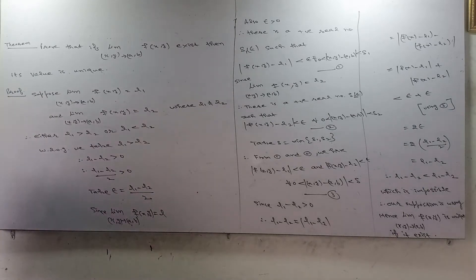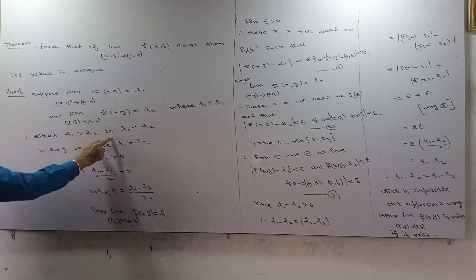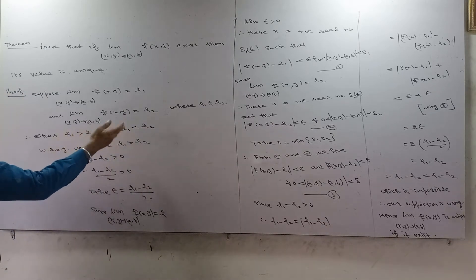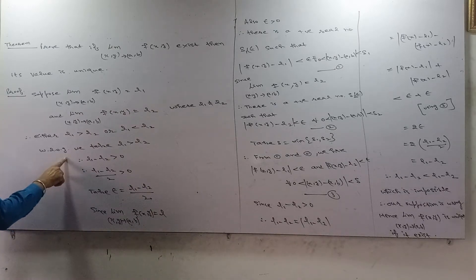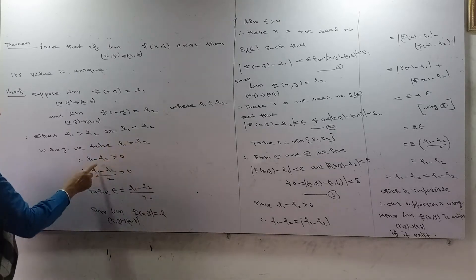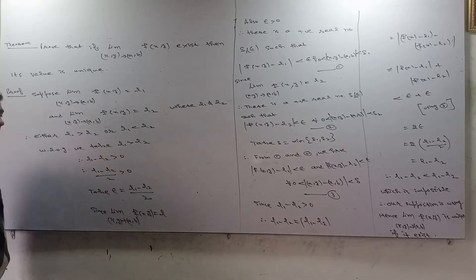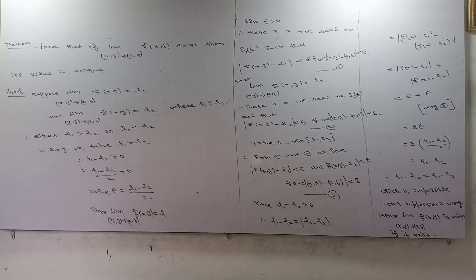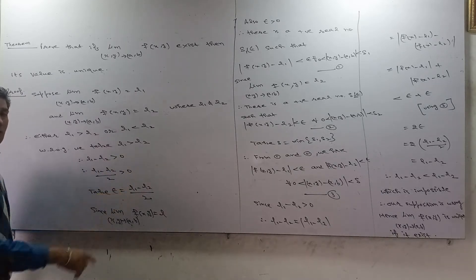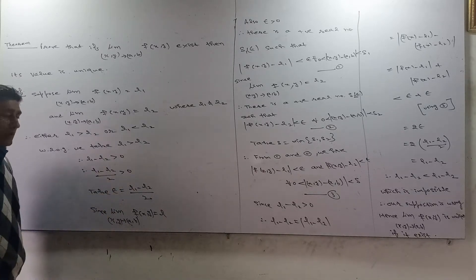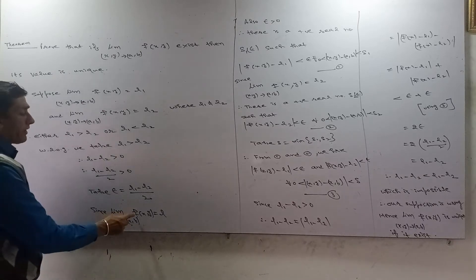Therefore, either L1 equals L2 or L1 is less than L2. Since L1 is not equal to L2, we take epsilon 1 equal to |L1 minus L2| over 2, so epsilon 1 is greater than 0. Since the limit of function f is equal to L1 when (x, y) approaches (a, b)...